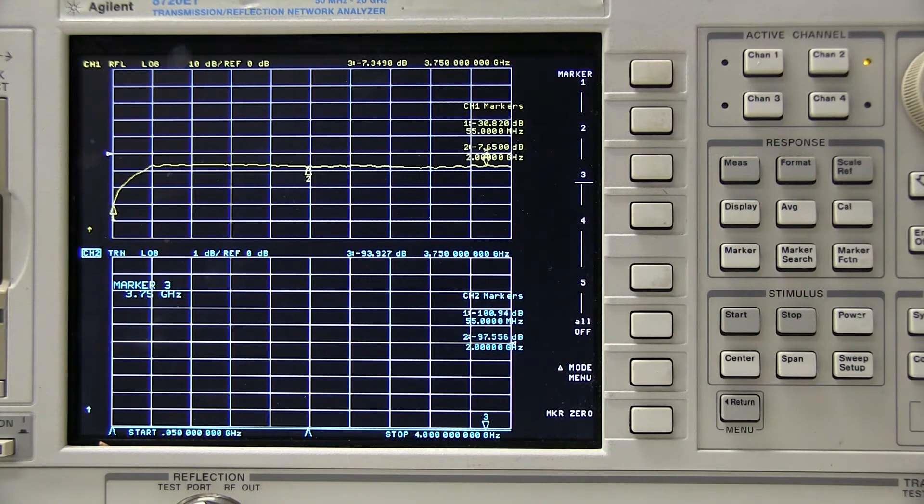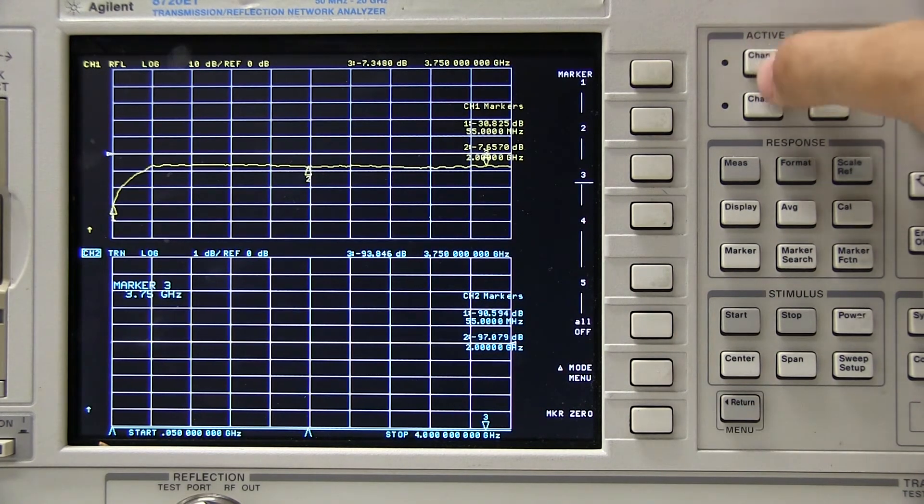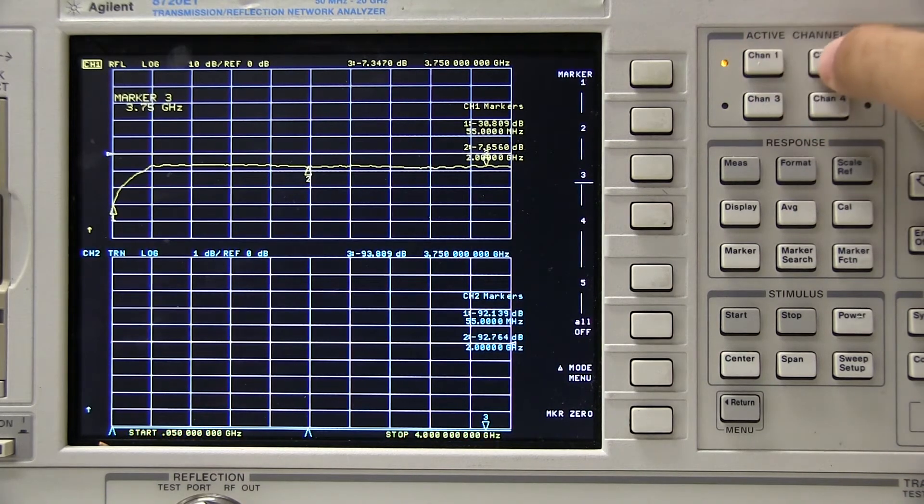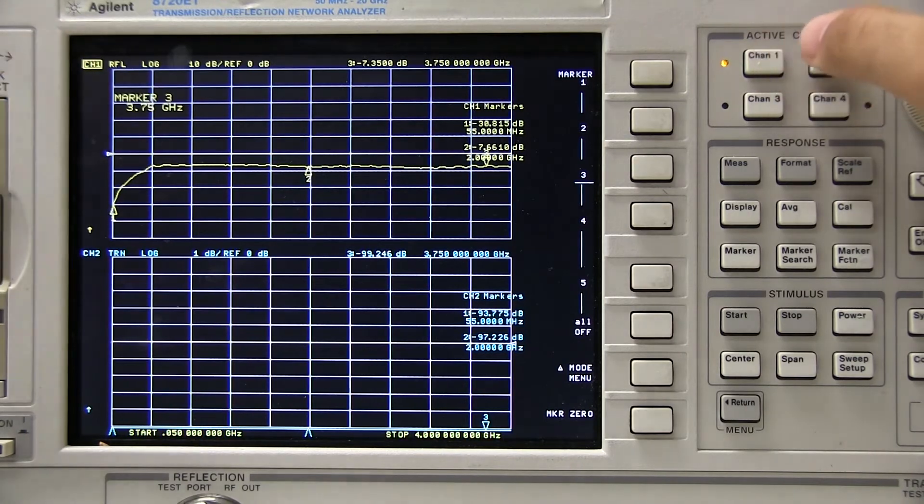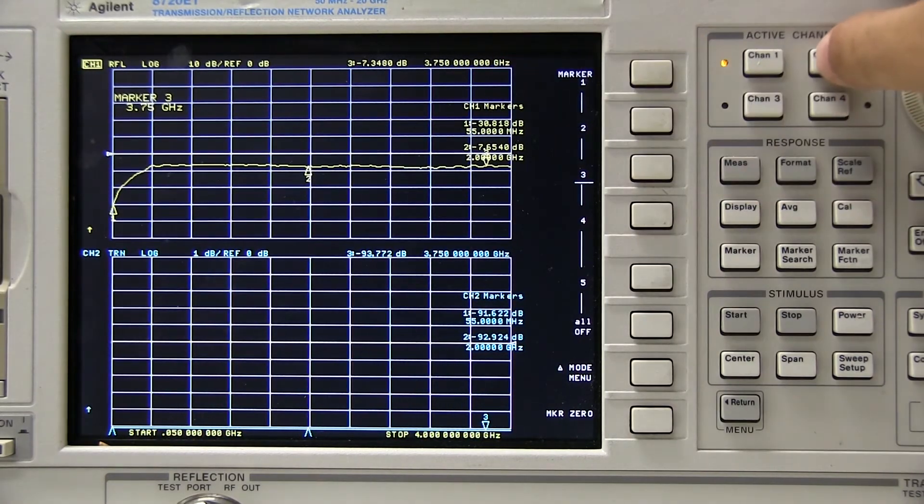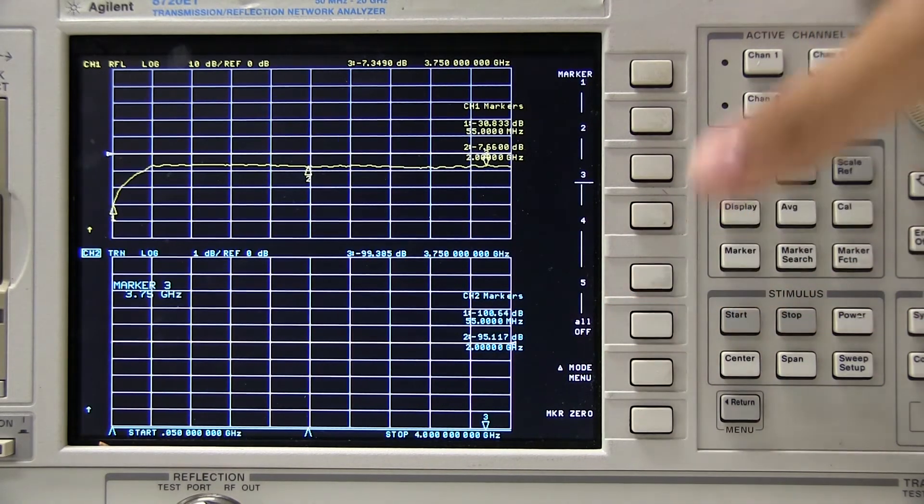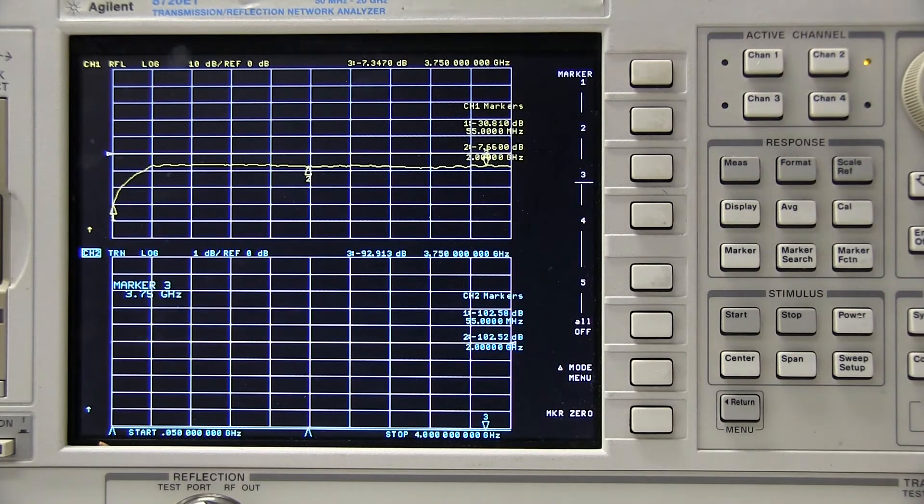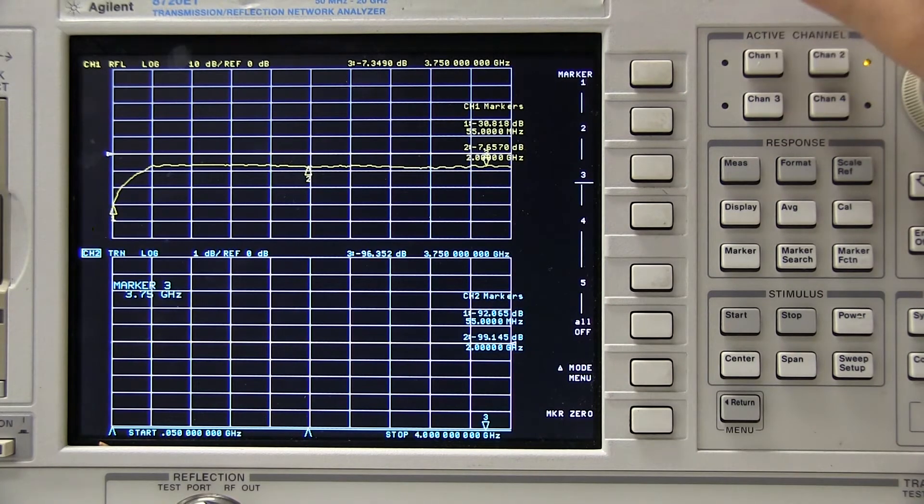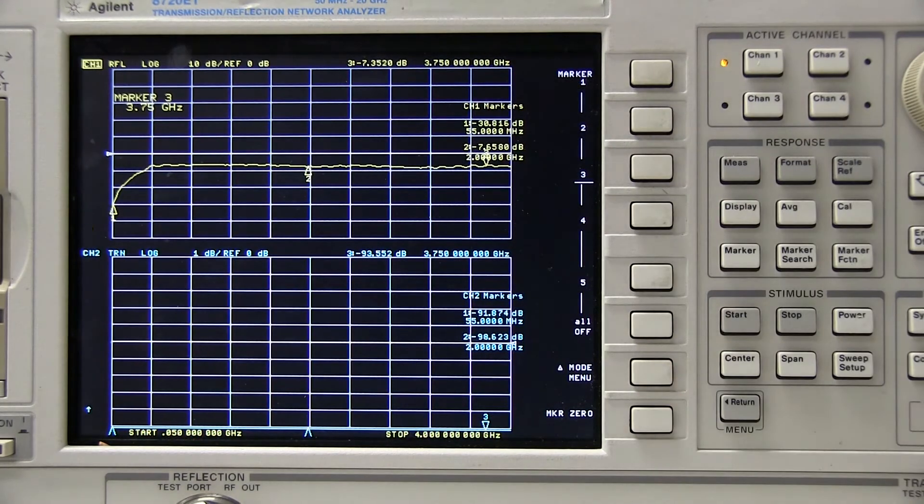Most network analyzers have an active channel button, which is right up here, which will allow you to pick whether you're manipulating channel 1, which is the S11 input return loss measurements, or the S21 gain measurements. So, right now we're going to calibrate the input return loss for the S11 measurement of the network analyzer.